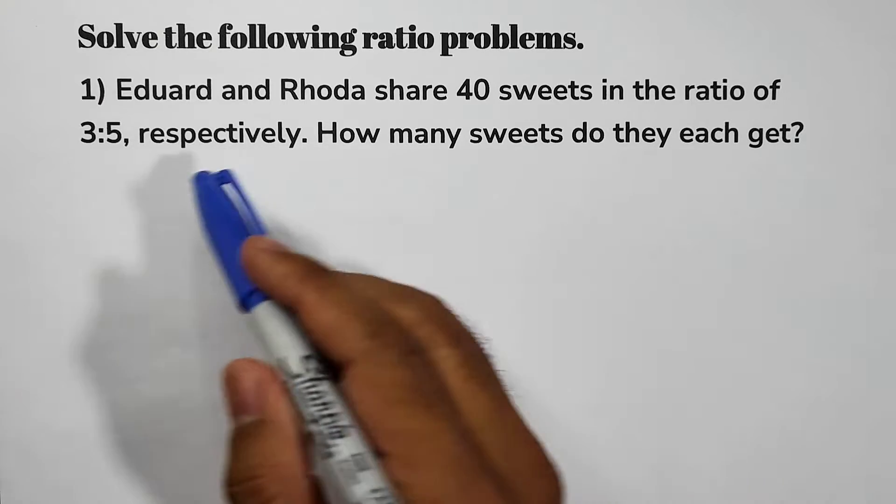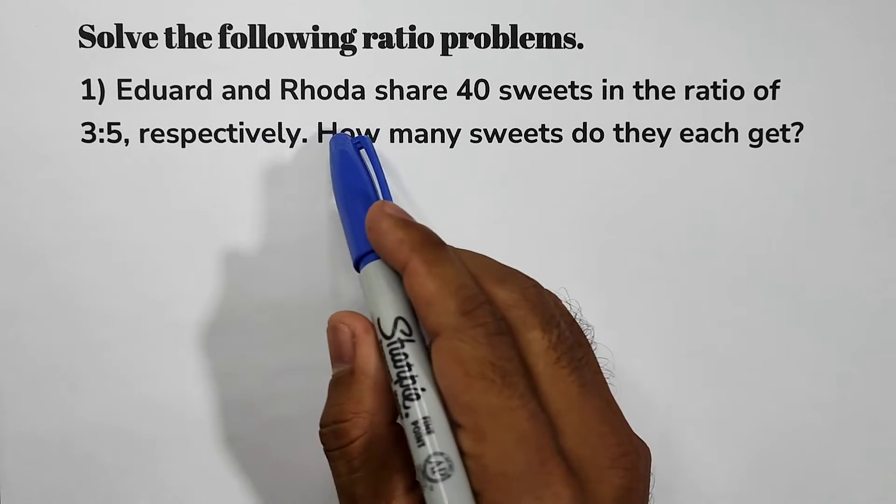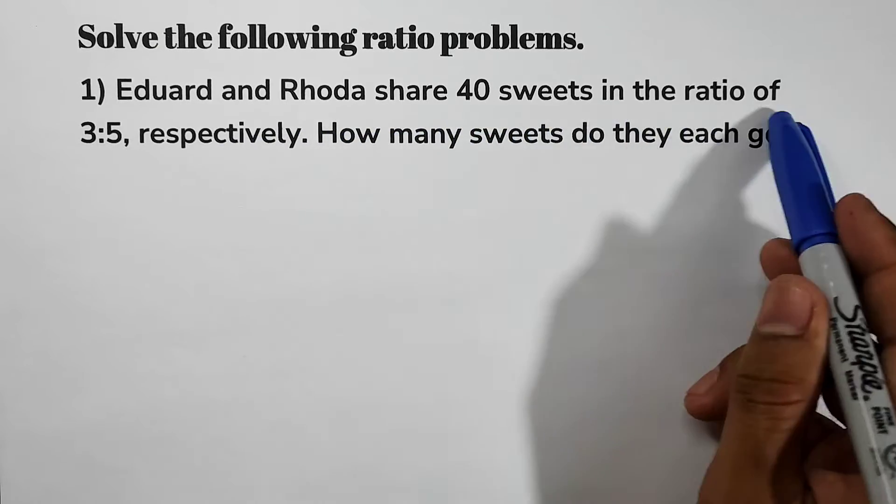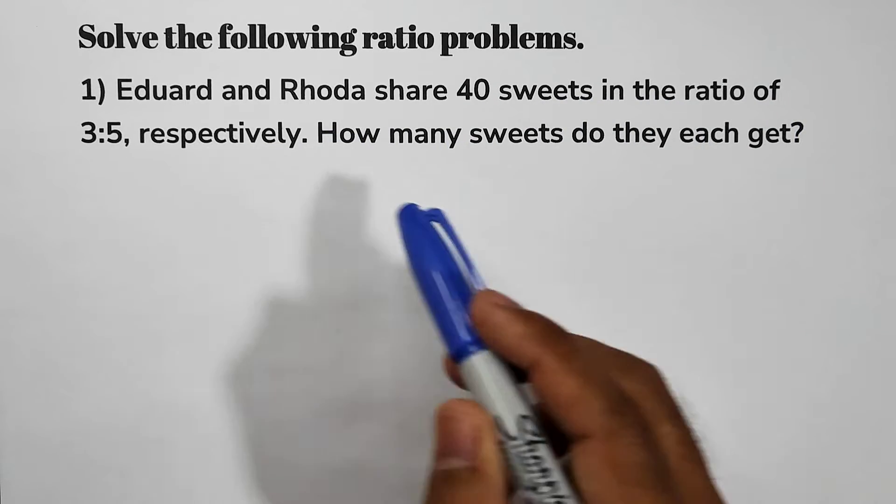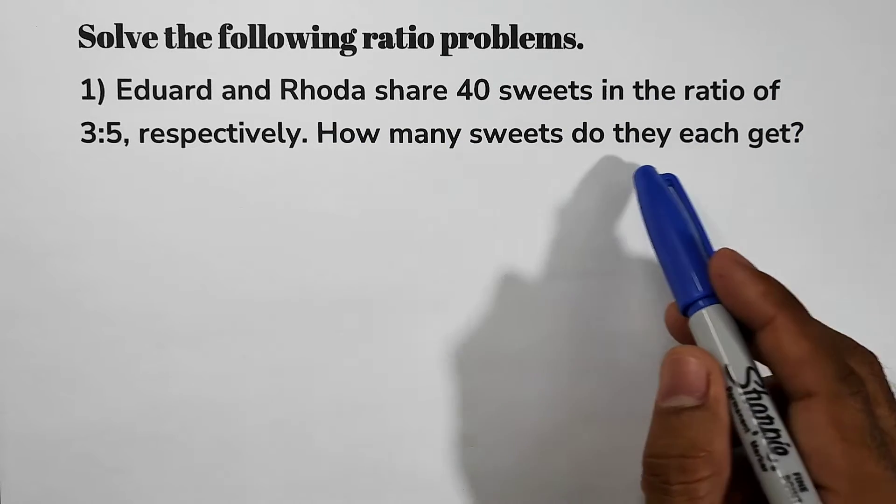So let us have item number 1. Edward and Rhoda share 40 sweets in the ratio of 3 to 5 respectively. How many sweets do they each get?